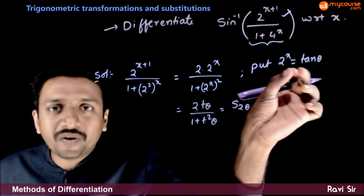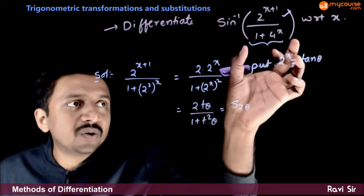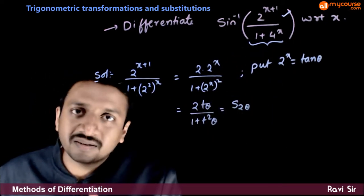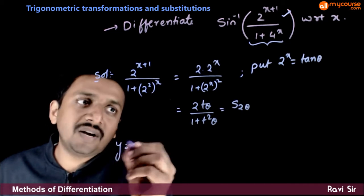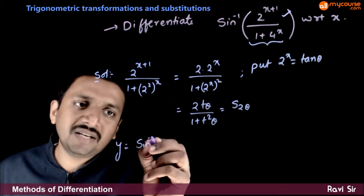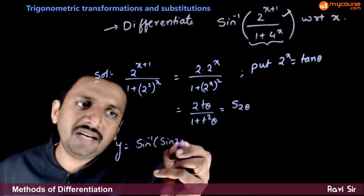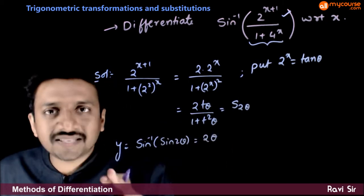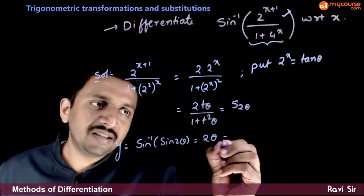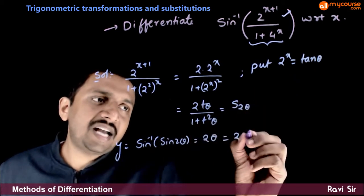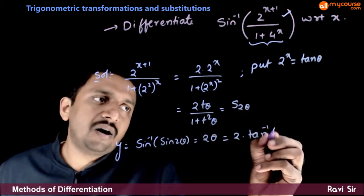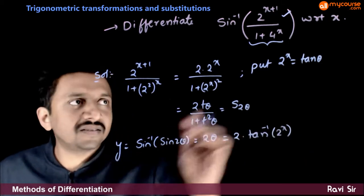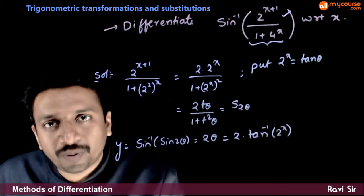So, if you put 2 power x is equal to tan theta, this whole expression becomes sin 2 theta. So, y is equal to sin inverse of sin 2 theta, which is equal to 2 theta. So, y is effectively equal to 2 theta, that is 2 times tan inverse of 2 power x.